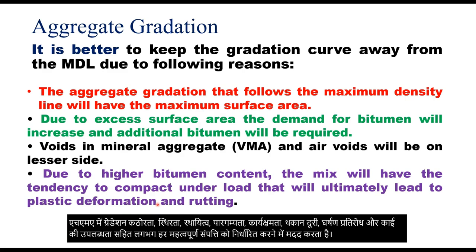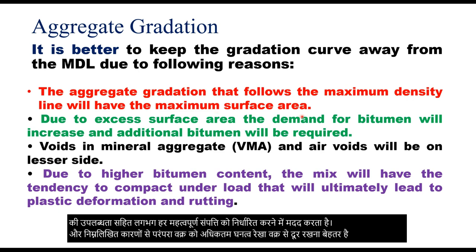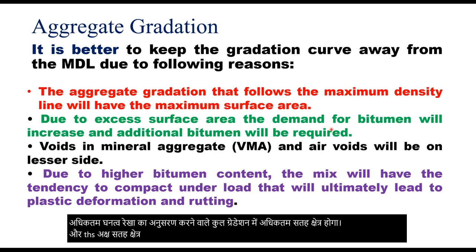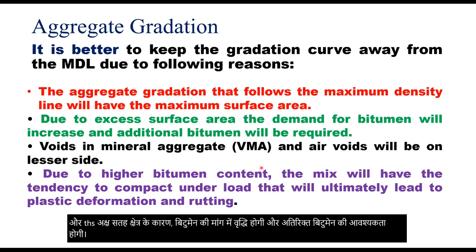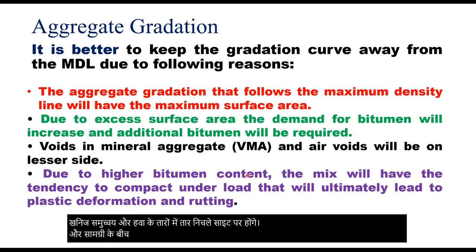It is better to keep the gradation curve away from the maximum density line curve for the following reasons. The aggregate gradation that follows the maximum density line will have the maximum surface area, and due to this excess surface area, the demand for bitumen will increase and additional bitumen will be required. Voids in mineral aggregate and air voids will be on the lower side, and due to this high bitumen content, the mix will have the tendency to compact under load, which will ultimately lead to plastic deformation and rutting in the layer.